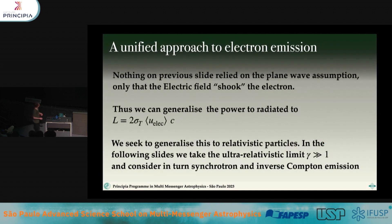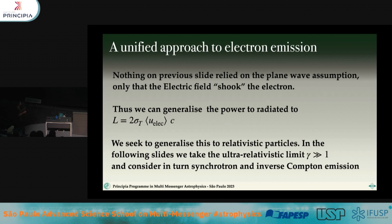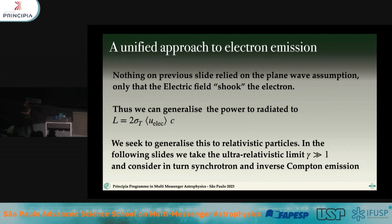Nothing in the previous derivation actually relied on it being a plane wave — we only cared that something shook the electron. So we can generalize: the power radiated is just twice the energy in the electric field, in a more generic form. What we want to do is generalize this for relativistic particles. We take the ultra-relativistic limit — v/c always equal to one — and consider in turn synchrotron and inverse Compton.